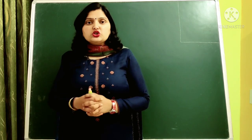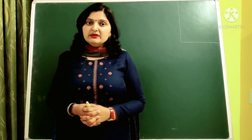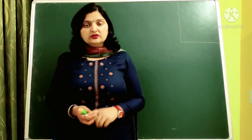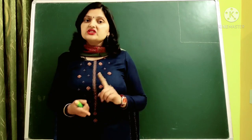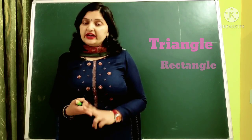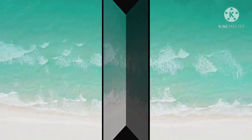In this video, we will discuss the perimeter of three different figures: one triangle, second rectangle, and the third is square.